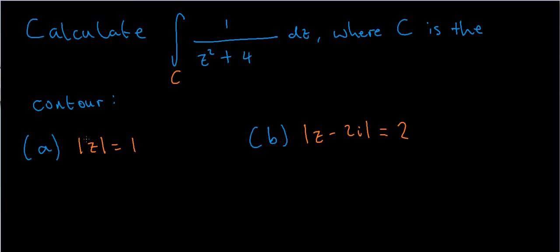So in this video I'd like to look at another example of a contour integral. This is slightly different to my previous examples. In this case I'm given a function, and I'm asked to integrate it over some different contours. Here I'm asked to integrate it over the circle mod z equals 1, and here I'm asked to integrate it over another circle mod z minus 2i equals 2.